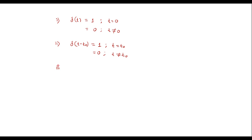Another property of the delta function is δ(at), the scaling property, which is equal to (1/|a|)·δ(t).